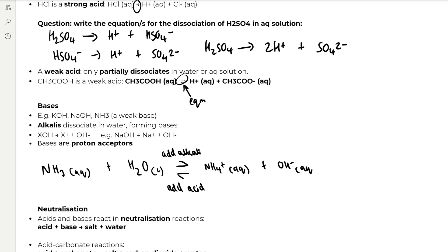Then bases, so we have some examples of bases: potassium hydroxide, sodium hydroxide, and ammonia, which is a weak base. The first two are strong bases. And alkalis are bases which dissociate in water. So we have the example equation of XOH, so the alkali, dissociating to form X+ and OH- ions. For example, NaOH dissociates to form Na+ and OH-.